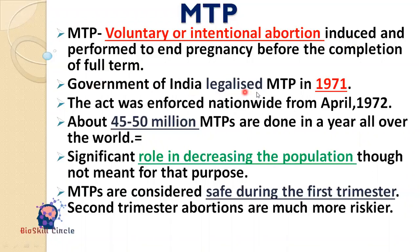The Government of India legalized MTP in 1971 but with certain riders so that people don't misuse it. The aim was to provide women access to safe abortion. It was implemented nationwide from April 1972, and about 45 to 50 million MTPs are done in a year all over the world, which is one fifth of the total number of pregnancies in a year.